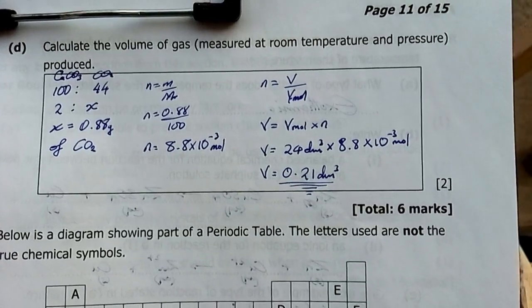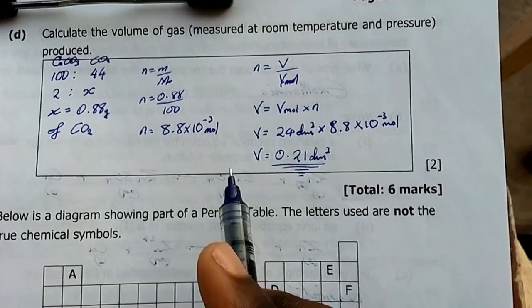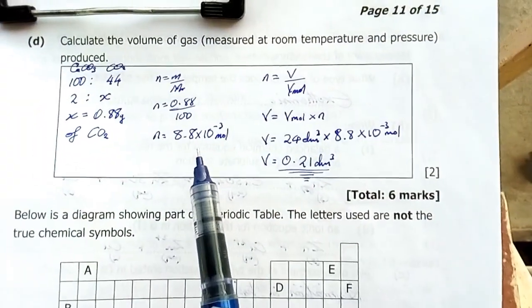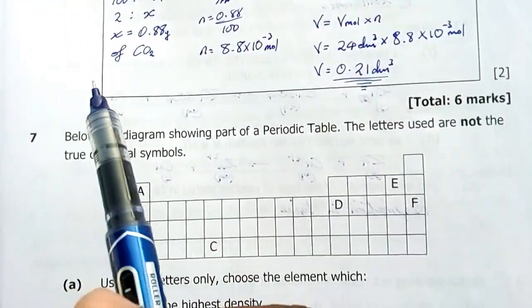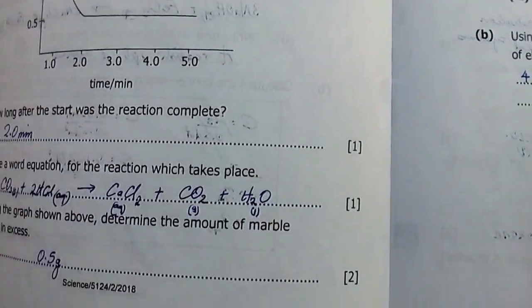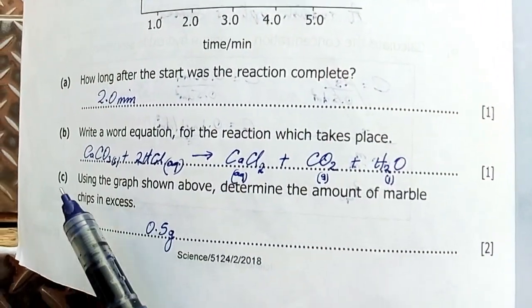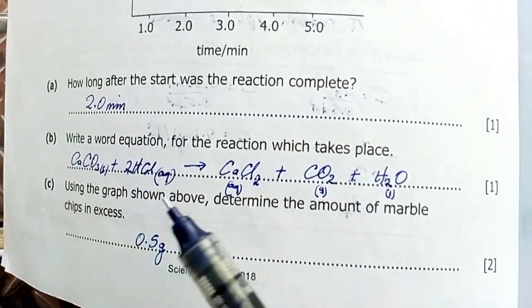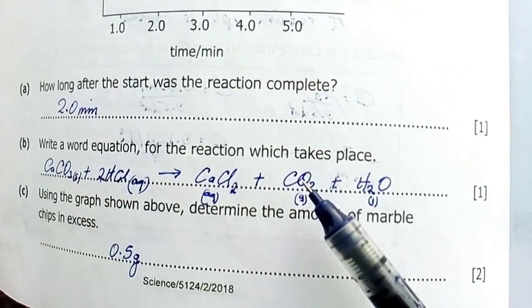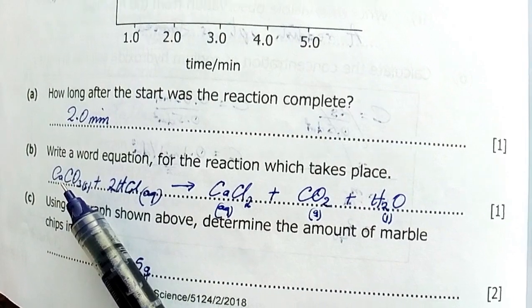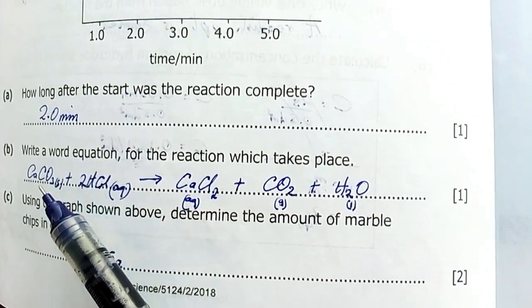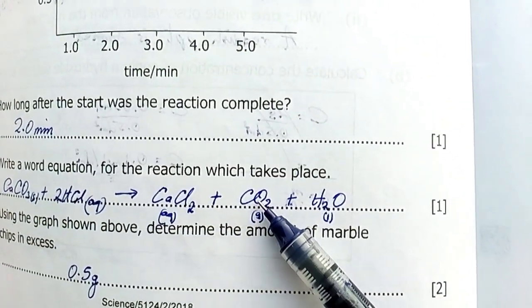Calculate the volume of the gas produced at RTP. Looking at the equation, we have calcium carbonate giving us one mole of carbon dioxide. Therefore this is the molar mass of calcium is 100 and the molar mass of carbon dioxide is 44. From my relation here, I'm having one mole which is 100 grams gives 44 grams of carbon dioxide.